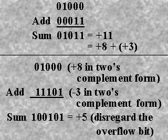Plus 3 is 0, 0, 0, 1, 1 in the sign and magnitude form. The process of addition of these two numbers appears as shown in the illustration.